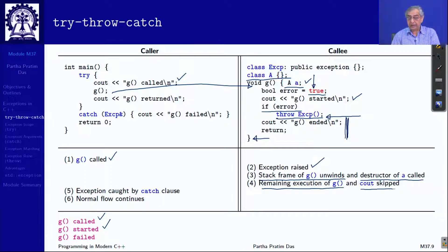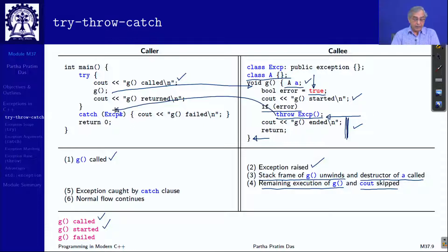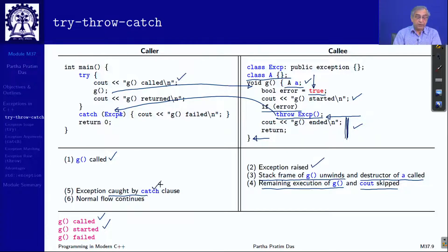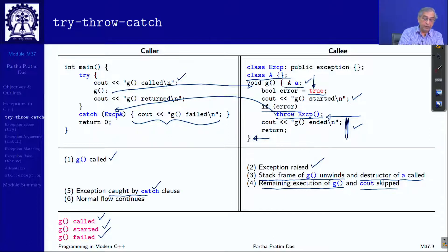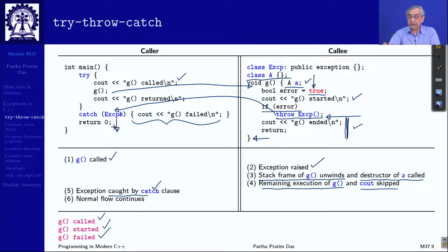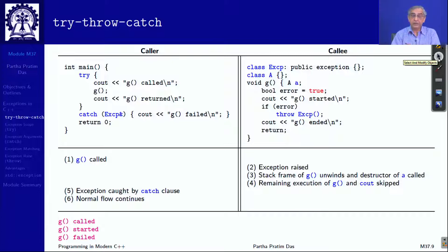After that, the remaining execution of G is skipped and control comes to the catch block. It is as if a ball has been thrown and we are catching that exception object — it is caught by the catch clause. The catch clause does whatever handling is required. In this case we just have a statement, so the failure is reported on the output and then normal flow continues in main. Main has to decide what to do about the incomplete execution of G — whether to call G again or call some other function. This is the mechanism of try-catch-throw, very important for error handling in C++.